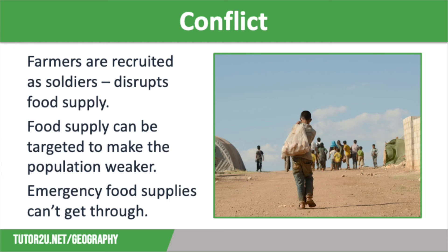Farmland is often destroyed to make it much harder for local people to use it productively in the future. In times of conflict, charities and aid workers will try to help those most in need by providing emergency supplies of food. However, there are times when aid workers are stopped from reaching those who desperately need help, or stopped from travelling into zones of conflict because it becomes too dangerous. Long-term aid is also available to help improve food supplies for the future, but government corruption often means that this money doesn't get to the people who actually need it. Over the last few decades, many LICs have experienced civil war, which has led to widespread famine and starvation.